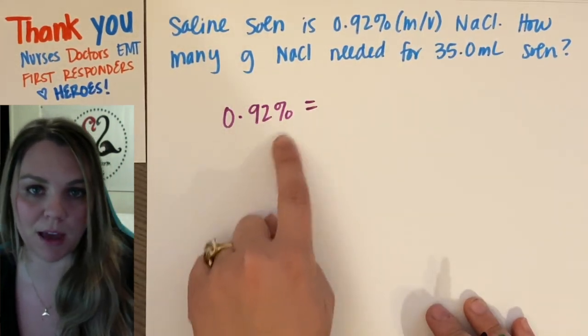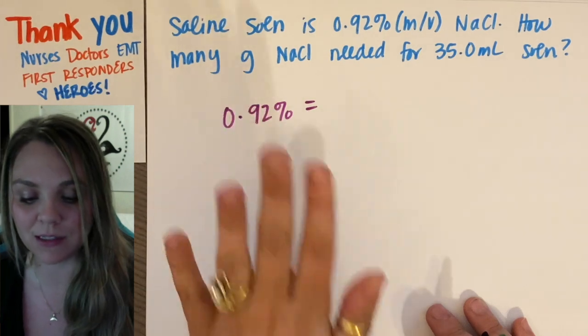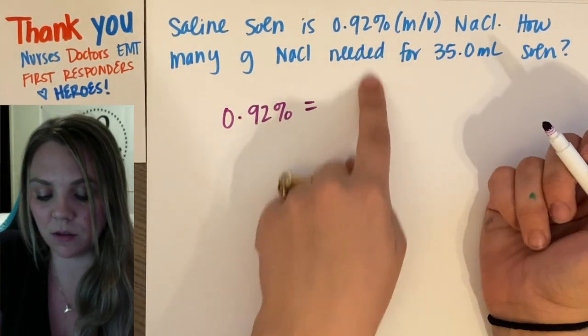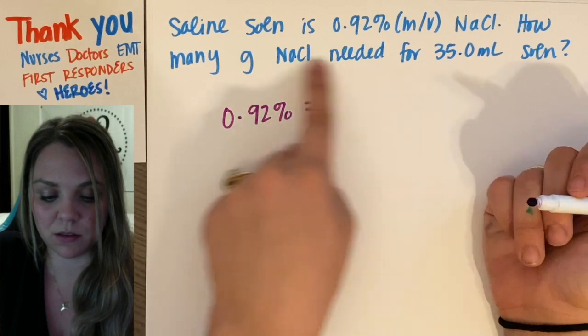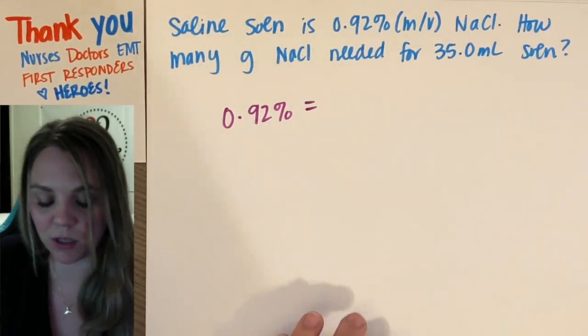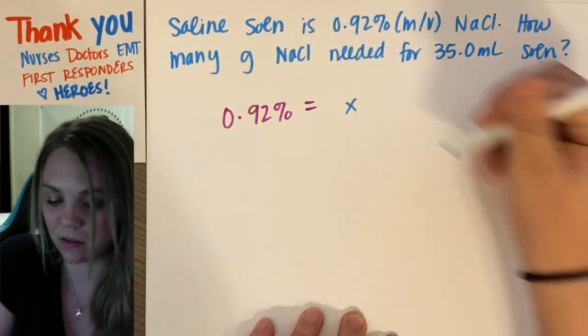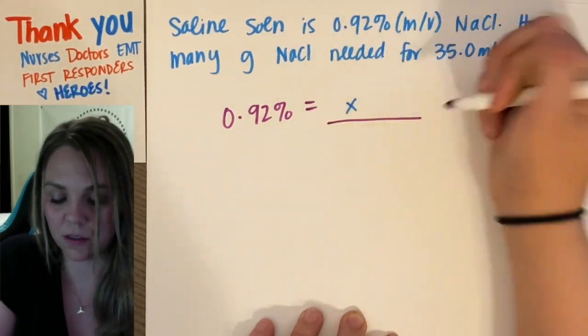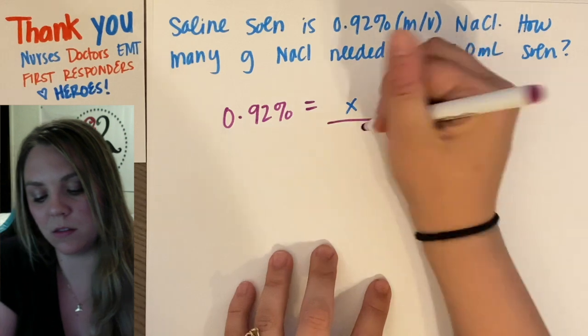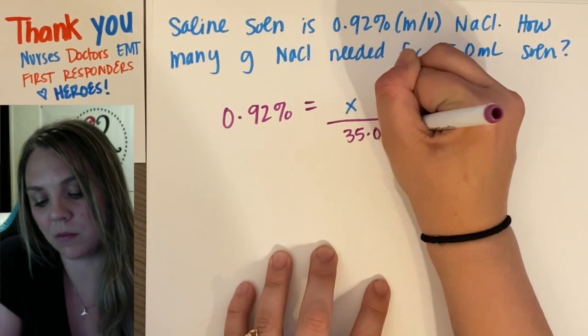So now you have 0.92 percent is, right? Because I have my mass volume percent. So I have this is the grams of my solute. I don't have it. That's what I'm trying to solve for. So x amount of grams divided by 35 milliliters, 35.0 mils.